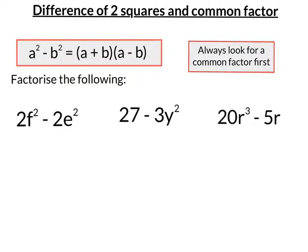So, for instance, in this first example, 2 is a common factor. That leaves me with f squared minus e squared, which is in the form of a difference of two squares, so this will leave me with 2, f plus e, f minus e.